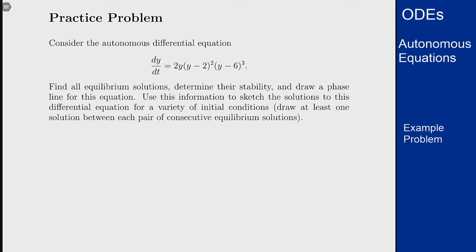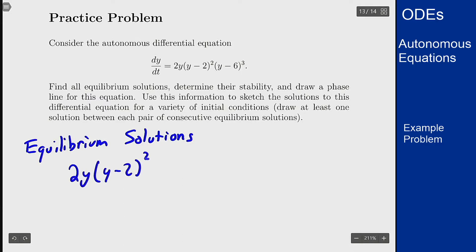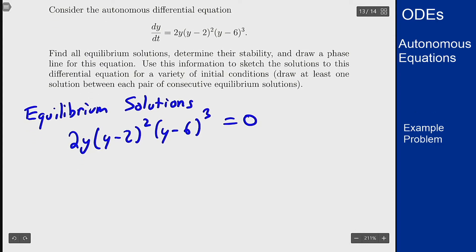The first step here is always to find the equilibrium solutions, and this is where the function on the right side here is 0. So I'll set 2y(y-2)²(y-6)³ equal to 0. In this case, we can clearly see the three solutions here are at y=0, y=2, and y=6.